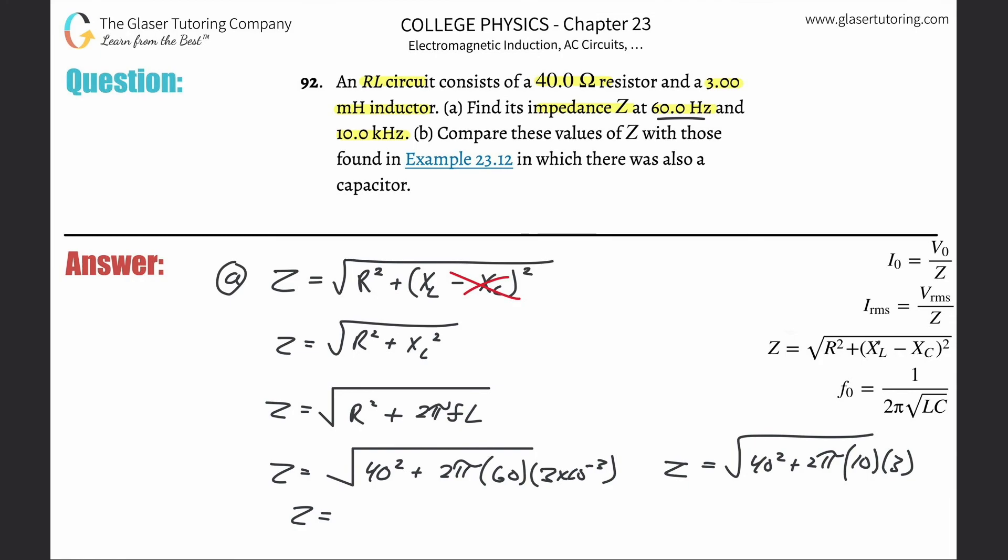And by the way, don't forget to square this. Always look back at your work. Don't forget to square it. Did you catch me on it? Probably screaming at the computer screen, 'What the hell are you doing?' I don't know what I'm doing. So square root of 40 squared plus parenthesis now 2π times 60 times 3 times 10 to the minus 3 squared. So now you get a value here of about 40. Look at how close that is to the actual overall resistance: 40.015. But I guess we'll just round it to 40 or so.